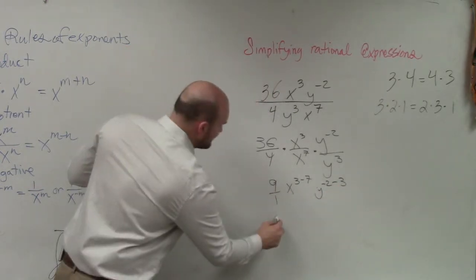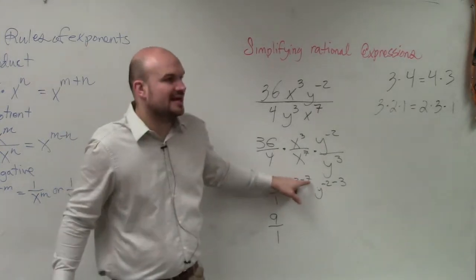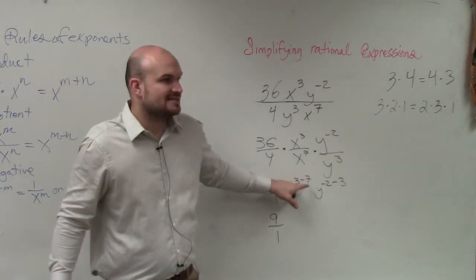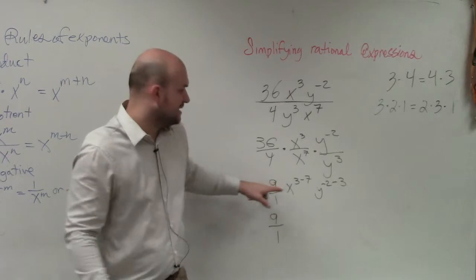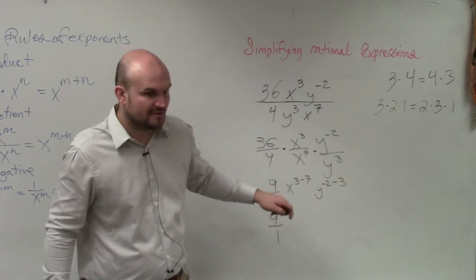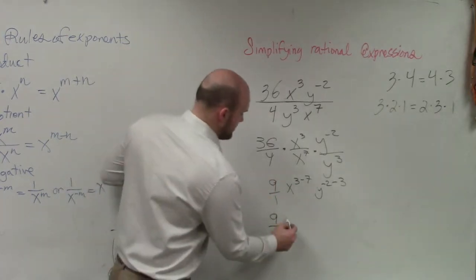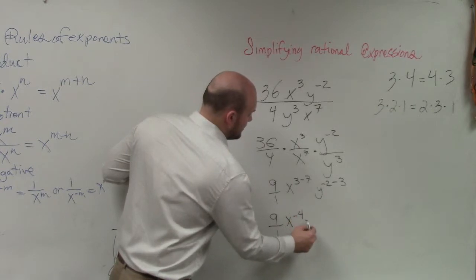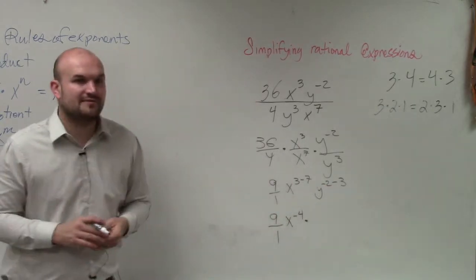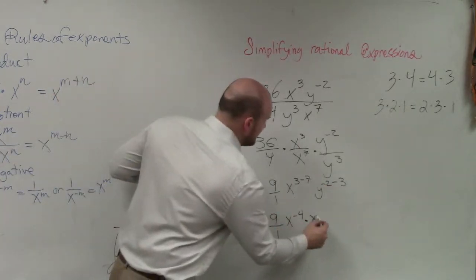So now I have 9 over 1. Now what is x to the 3 minus 7? x to the negative 4th. And then this is negative 2 minus 3 is y to the negative 5th.